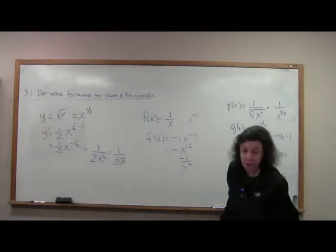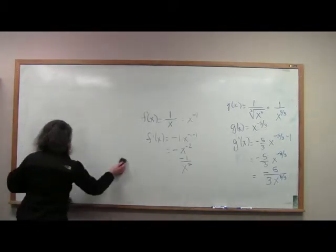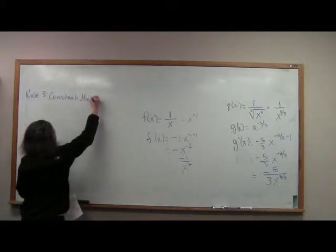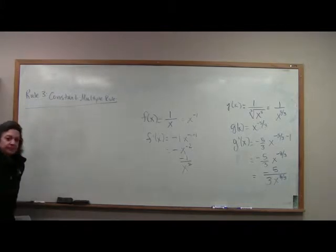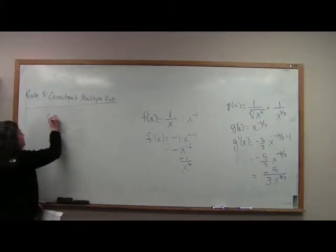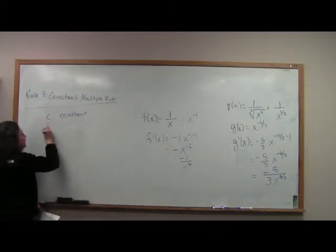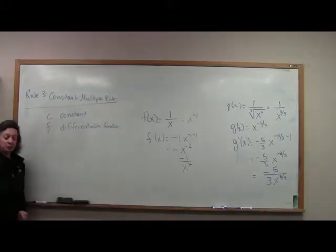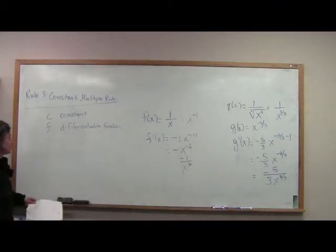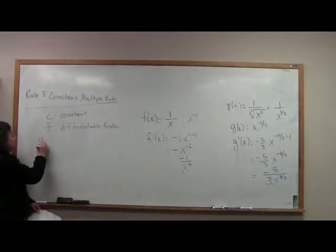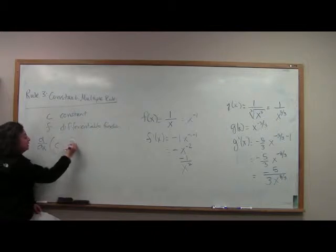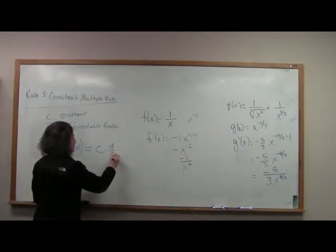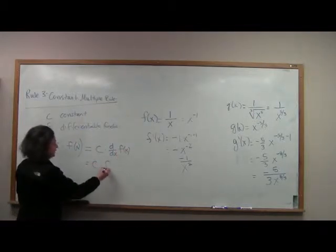Our third rule is called the constant multiple rule. If c is some constant and f is some differentiable function — a function that we can take the derivative of — what this rule says is: if you want to take the derivative of a constant times a function, you can pull your constant out in front and then take the derivative of that function, giving you c times f prime of x.